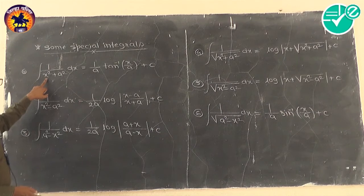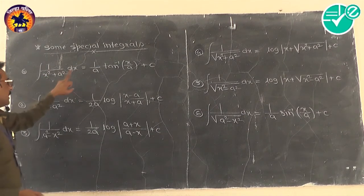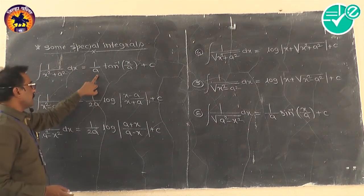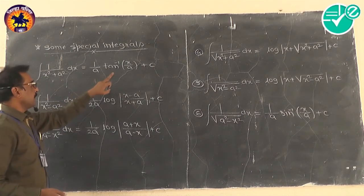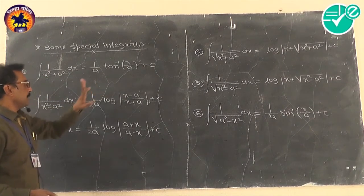When the integration is 1 upon (x² + a²) dx, then the answer we have to write is 1/a · tan⁻¹(x/a) + c.